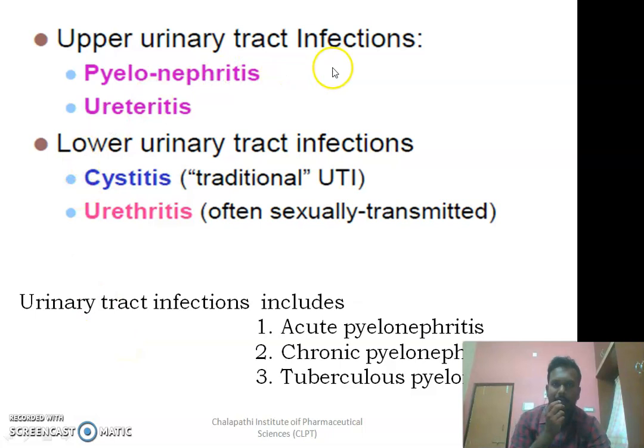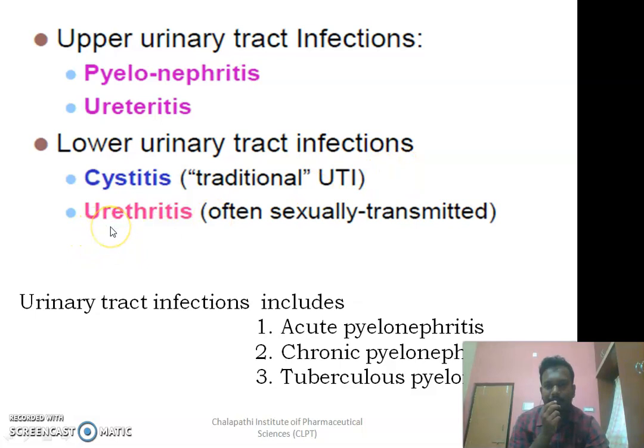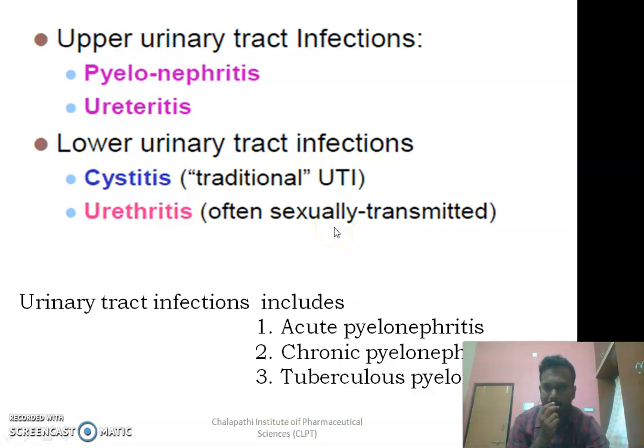The upper urinary tract infection — that means kidney infection — is called pyelonephritis, and if it is for ureters, we will call it ureteritis. Coming to the lower urinary tract infections, we will call it cystitis if it affects the bladder, and if it affects the urethra, we will call it urethritis. Cystitis is the most common form of lower urinary tract infection, and urethritis is mostly observed only in sexually transmitted cases.